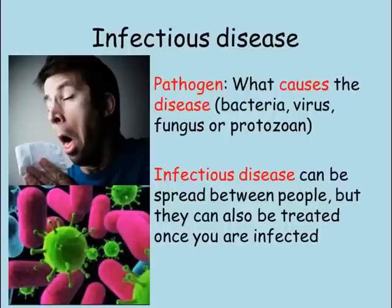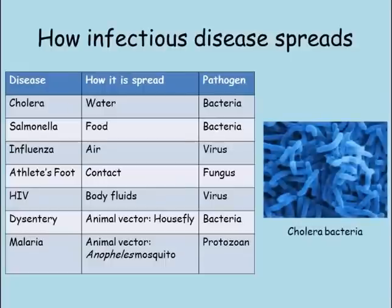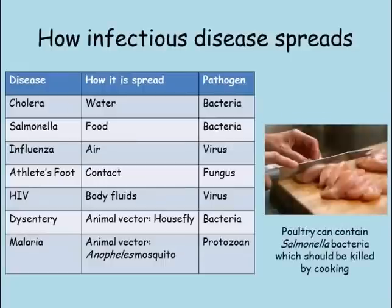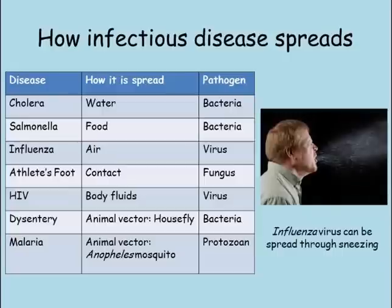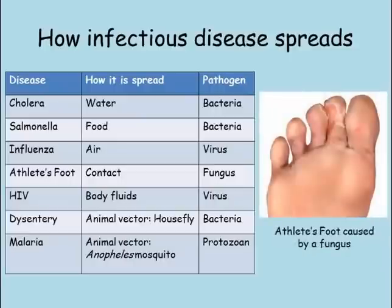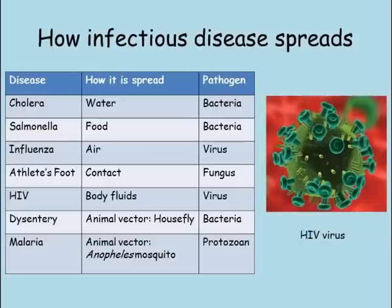Infectious diseases can be spread between people in many different ways depending on the particular pathogen involved. For example, cholera is caused by a bacterium that spreads through water. Salmonella bacteria can cause food poisoning. The common cold and influenza are both caused by viruses that are airborne and can spread by sneezing out virus particles and someone else breathing them in. The fungus that causes athlete's foot can only be picked up through contact between the skin and the fungus. HIV, the virus that can lead to a person developing AIDS, is spread through body fluids such as blood being shared.